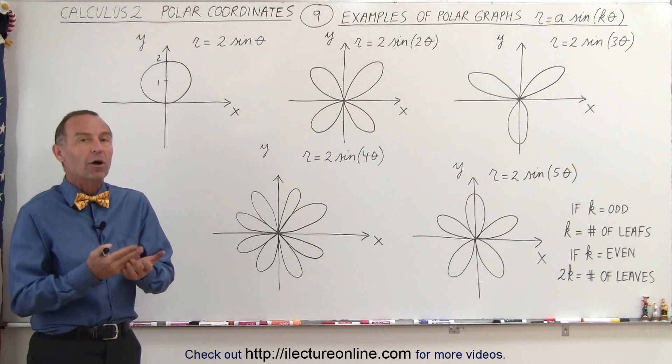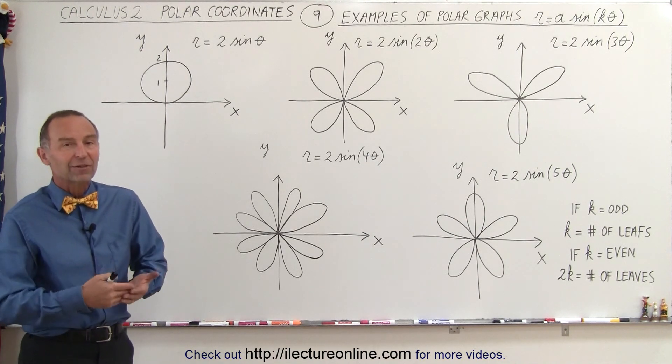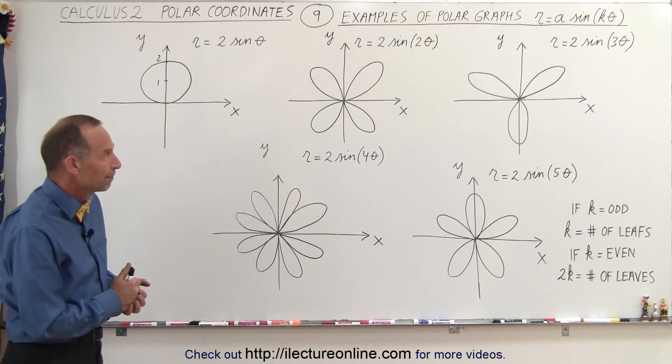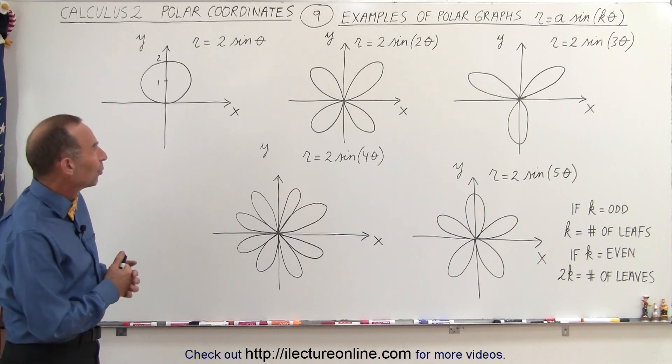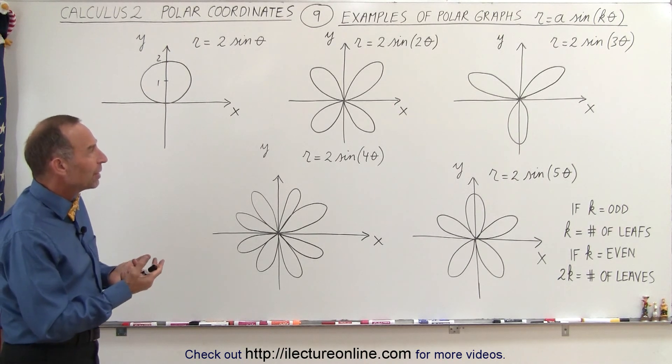So let's first investigate what r equals some constant times the sine of theta, or the sine of some constant times theta looks like. Notice that when it comes to the sine, there's some similarities or some unique properties.